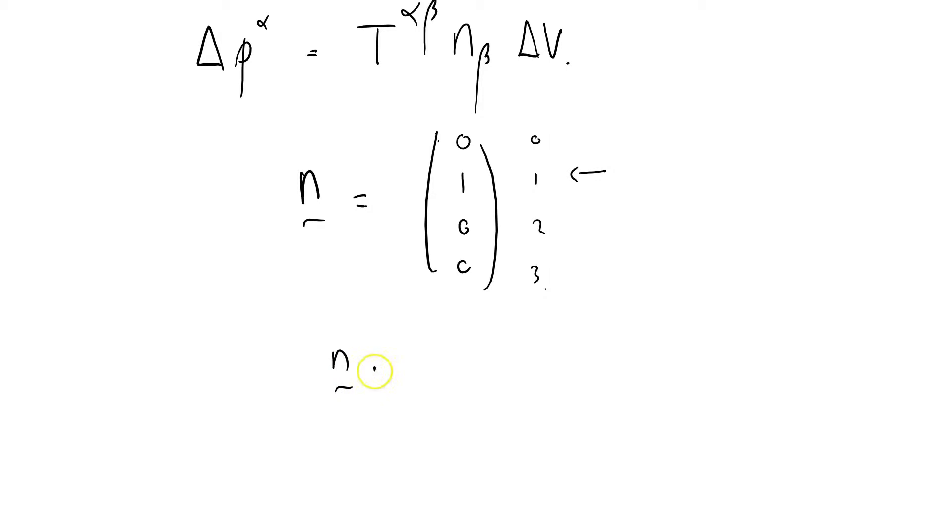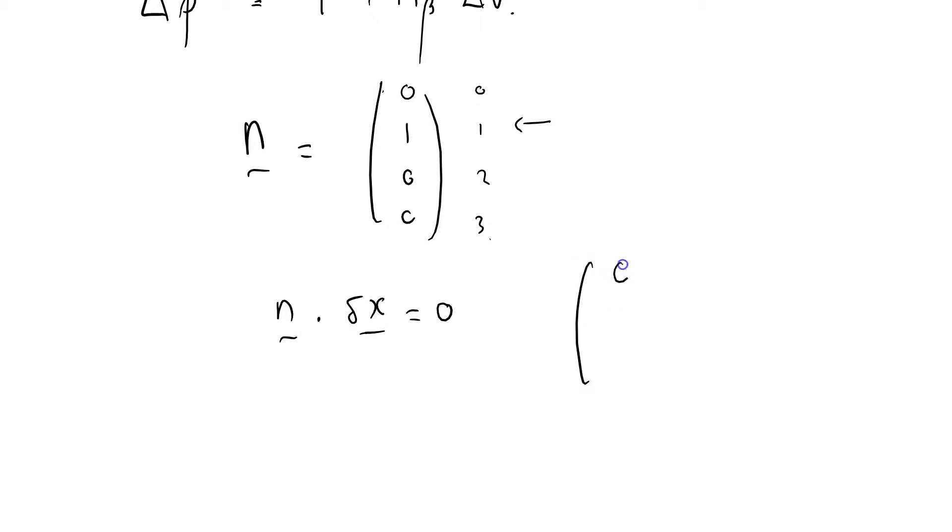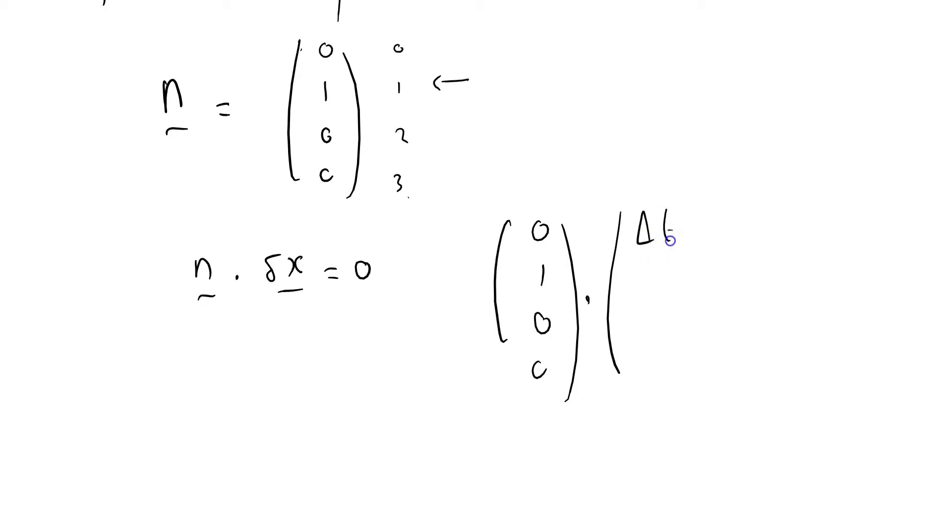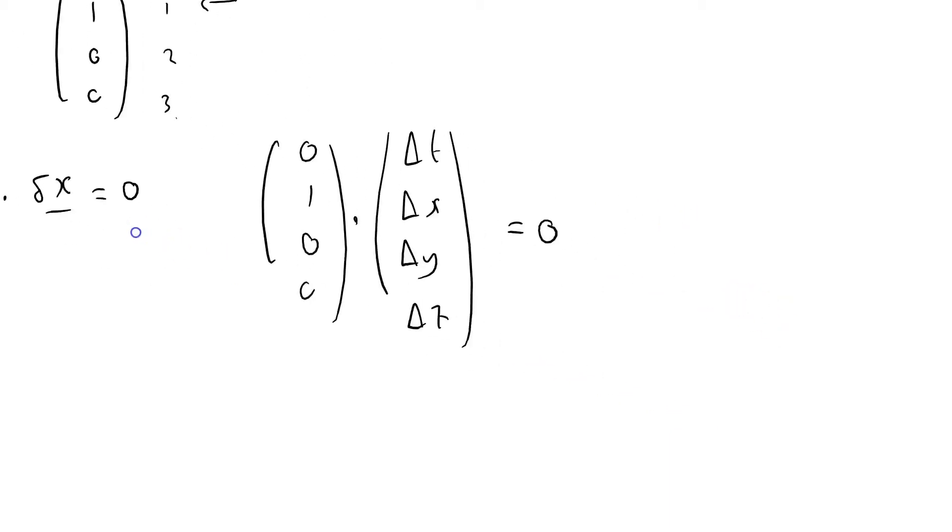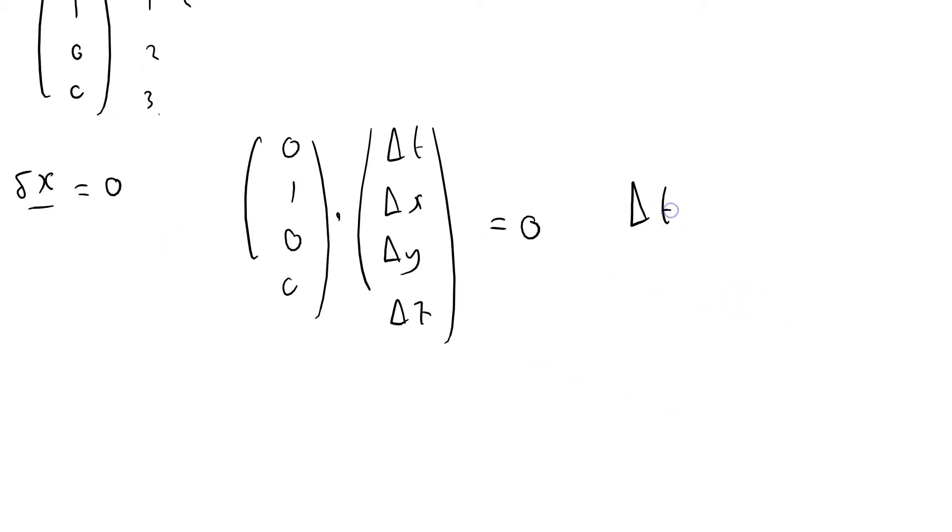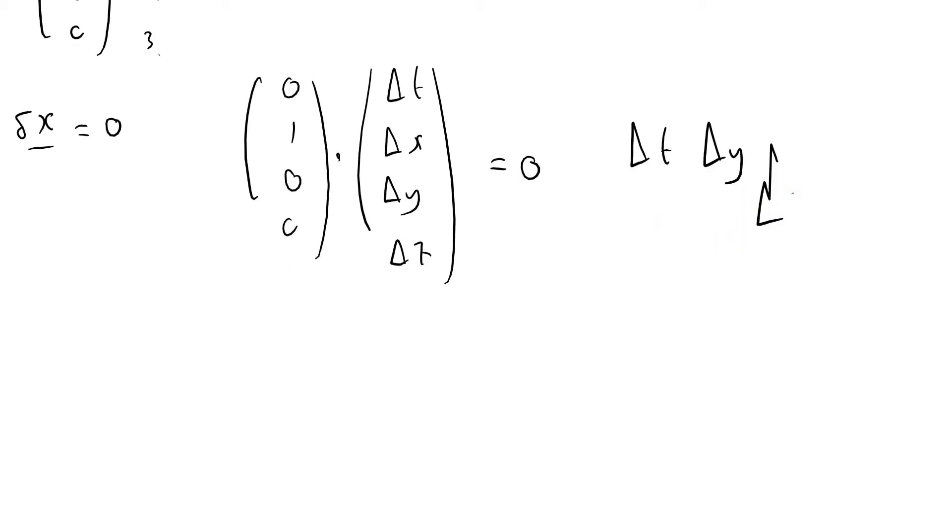So if I consider, I know that n times delta x equals 0, that defines my control volume. I've got 0, 1, 0, 0 dot delta t, delta x, delta y and delta z equals 0. So that tells me that delta t is free, delta y is free, and delta z is free, but delta x equals 0.